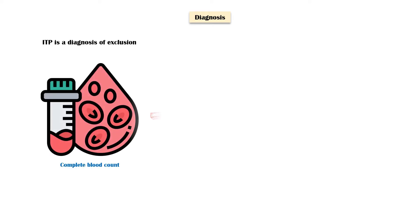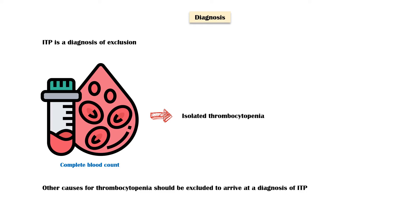ITP is a diagnosis of exclusion, which means that there is no specific test to diagnose it. Complete blood count will show isolated thrombocytopenia, and other cell counts and parameters will be normal. However, to arrive at a diagnosis, other causes for thrombocytopenia should be excluded.